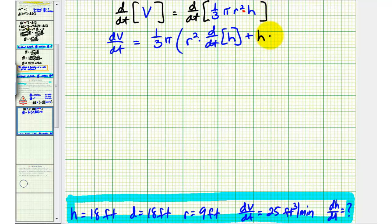Plus the second function, which is h, times the derivative of the first function with respect to t, which is r squared.